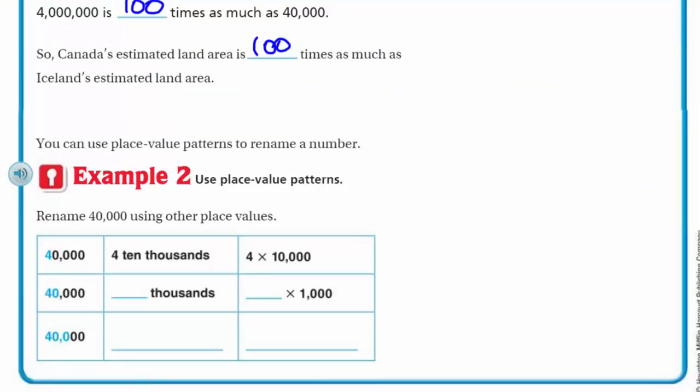Okay, now we move on to you can use place value patterns to rename a number. Okay. Example two, use place value patterns. Okay. Rename 40,000 using other place values. So we can say that 40,000 here is the same as 4 ten-thousands. Okay, that's true. That's like renaming it means the same thing. And 4 times 10,000, this is like what we did for expanded form and that's true too.